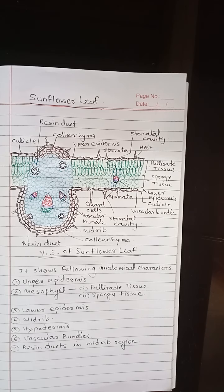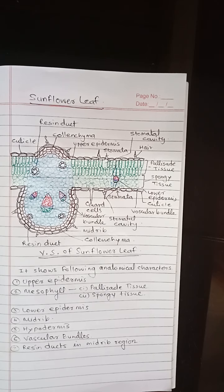The structure of the lower epidermis is also similar to that of the upper epidermis. The difference is that a greater number of stomata are present on the lower epidermis than the upper epidermis. Stomata are guarded by guard cells, and just below the guard cells there is a cavity called the sub-stomatal cavity.